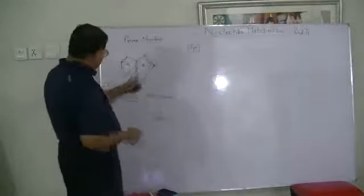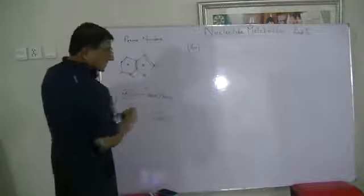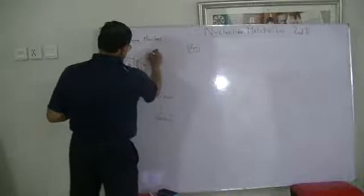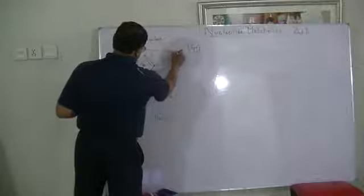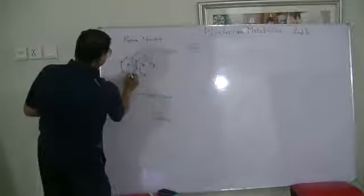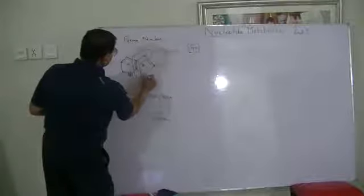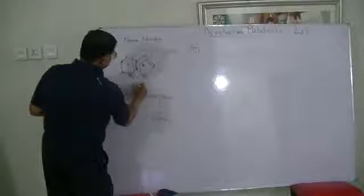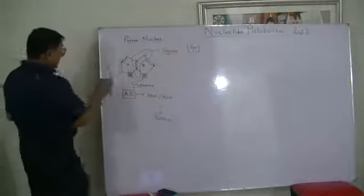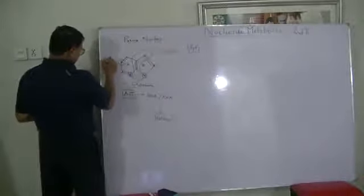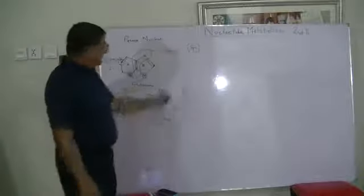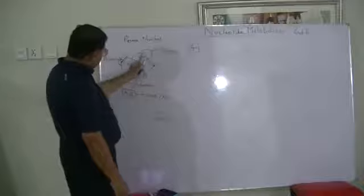In the synthesis, if this is the main nucleus, in a nutshell, this portion — specifically atoms C4, C5, and N7 — is formed by glycine. Glycine is an amino acid.